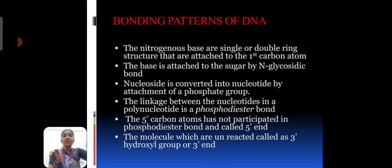Next we will see about bonding patterns of DNA. The nitrogenous bases are single or double ring structure that are attached to the first carbon atom. The basis is attached to the sugar by N-glycosidic bond. The nucleoside is converted into nucleotide by attachment of the phosphate group. The linkage between the nucleosides in the polynucleotide is the phosphodiester bond. The five carbon atom is not participate in the phosphodiester bond and also called five prime end. The molecules that are unreacted is called 3 prime hydroxyl group or 3 prime end.